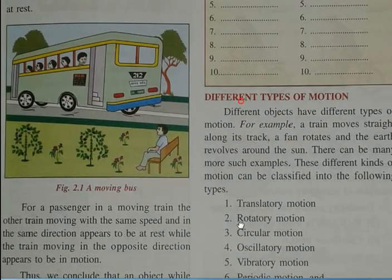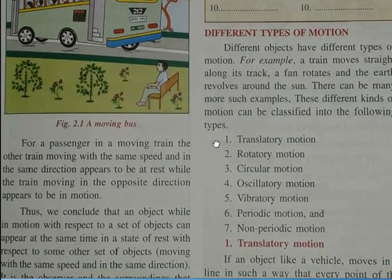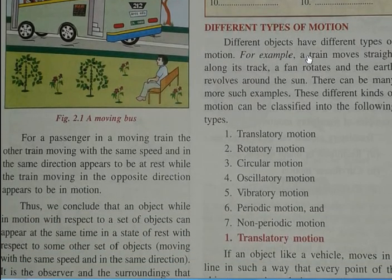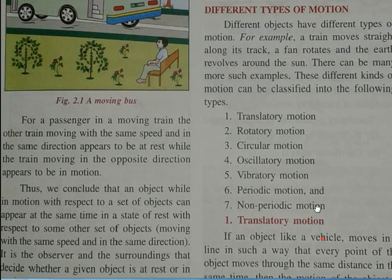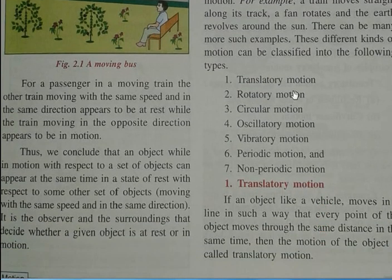Now, different types of motion. Different objects have different types of motion. For example, a train moves straight along a track, a fan rotates, and the Earth revolves around the sun. These different kinds of motions can be classified into the following types: number one, translatory motion; two, rotatory motion; three, circular motion; four, oscillatory motion; five, vibratory motion; six, periodic motion; and seven, non-periodic motion. Next class we will start translatory motion.